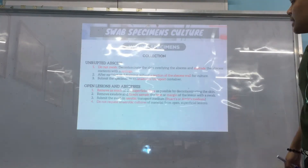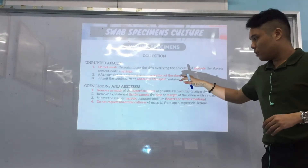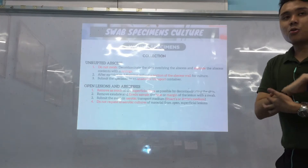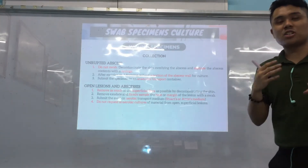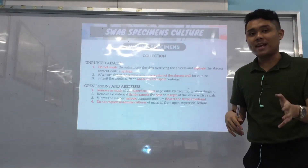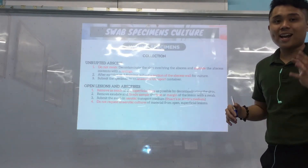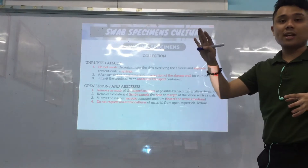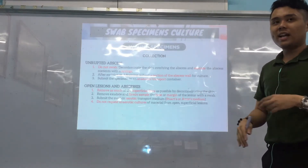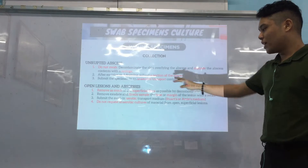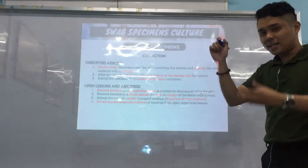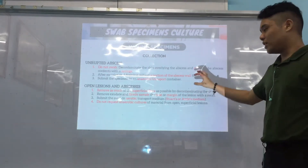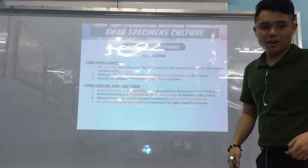For open lesions and abscesses, since the wound is open, it is well contaminated with normal flora. Remove as much normal flora as possible by decontaminating. We don't really look for anaerobes here because it's an open lesion exposed to air and oxygen. Remove exudate, firmly sample the base or margin, and submit the swab in aerobic transport — such as Stuart's or Amies.